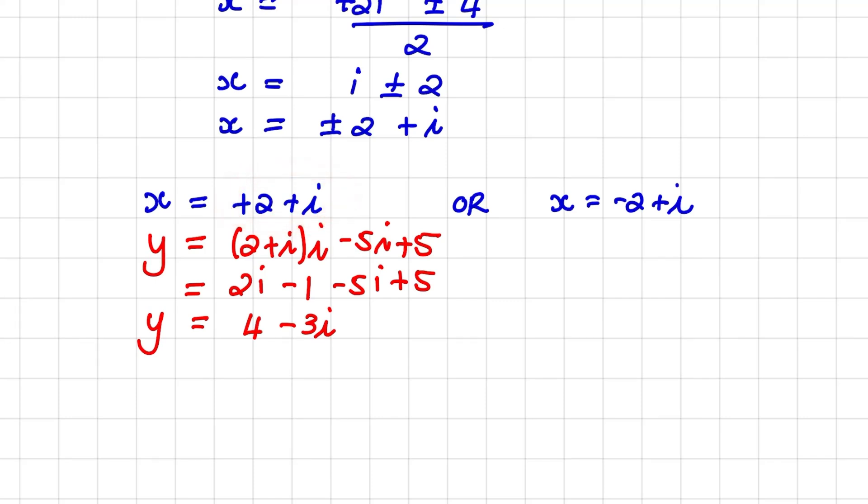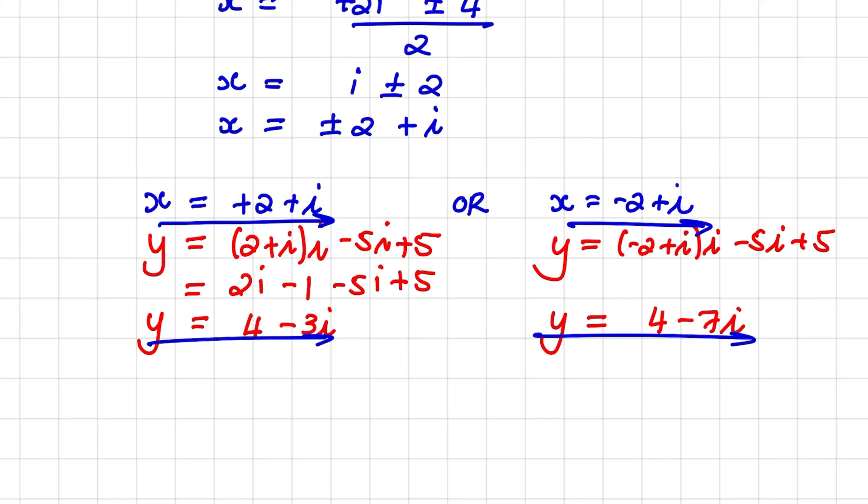And we can follow that same process for x equals to negative 2 plus i. So y is equals to negative 2 plus i times i minus 5i plus 5. And when I expand, I have y is equals to 4 minus 7i. So when x is equals to negative 2 plus i, then y would be equals to 4 minus 7i. And that's how we solve x and y simultaneously using complex numbers.